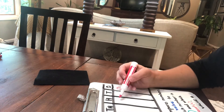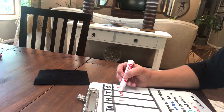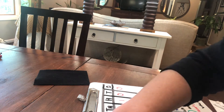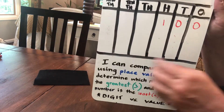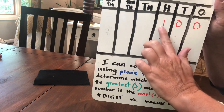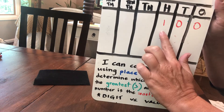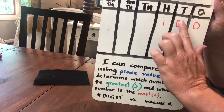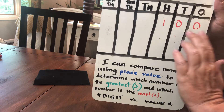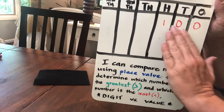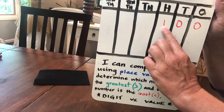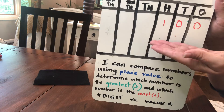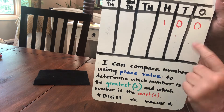If I continue to move it across the place value chart, every time I move to the left it's like multiplying by ten. I've moved it one column to the left to the hundreds place. Now, using zeros as placeholders, I now have the number one hundred. There's one group of hundreds here. Look how value is different than digit.